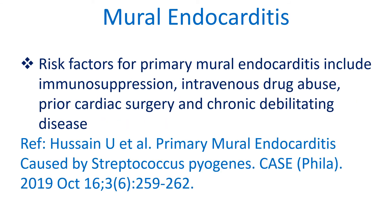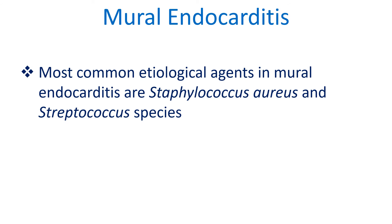Risk factors for primary mural endocarditis include immunosuppression, intravenous drug abuse, prior cardiac surgery, and chronic debilitating disease. The most common etiological agents in mural endocarditis are Staphylococcus aureus and Streptococcus species.